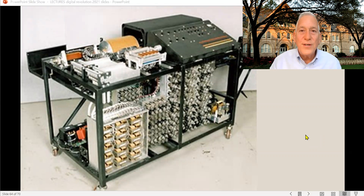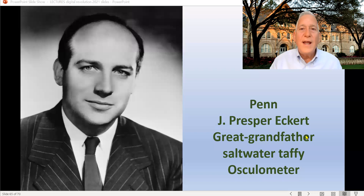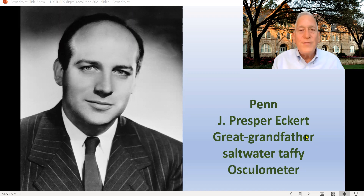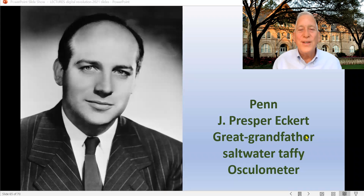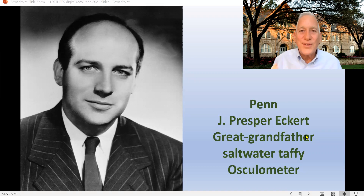Fortunately for him, a couple of things happened. He gets an appointment as a professor at the University of Pennsylvania, and there he meets a guy named Presper Eckert — J. Presper Eckert, son of a millionaire real estate developer, but more importantly, the great-grandson of the person who invented the saltwater taffy machine. In other words, his family had in its culture this notion of: let's invent things and then create businesses around them. Let's do it as an engineering thing — not just conceptual ideas, but how are we going to make it work?